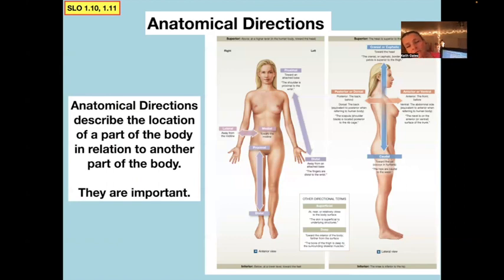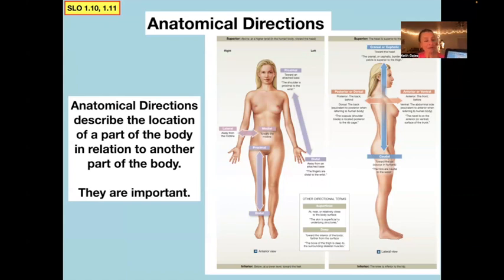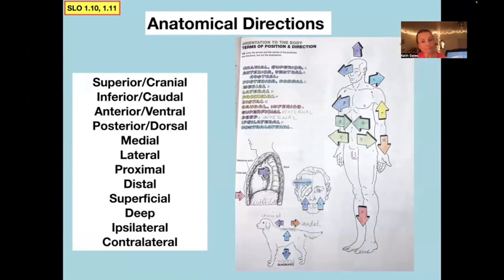Anatomical directions describe the location of a body part in relation to another body part. It's like saying somebody is shorter than somebody else, but instead these terms say things like superior, inferior, anterior, posterior.